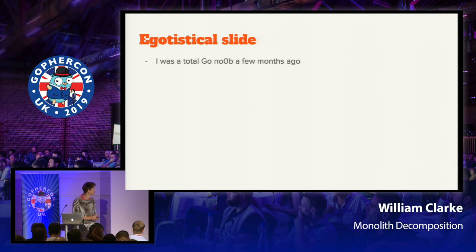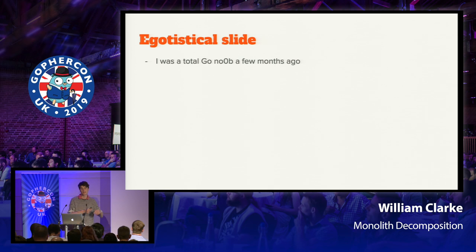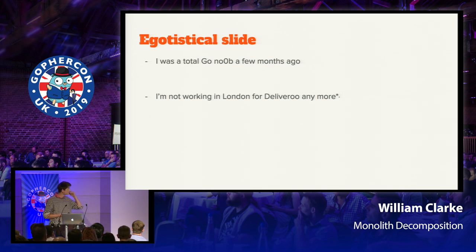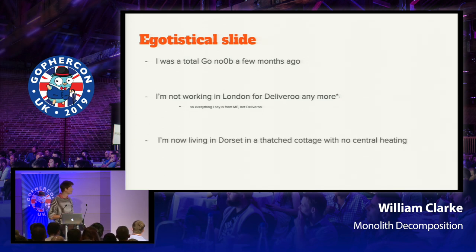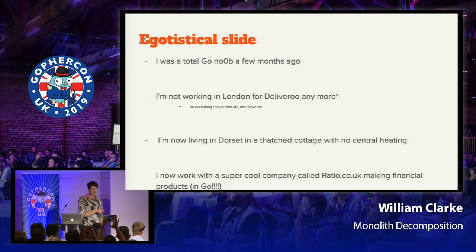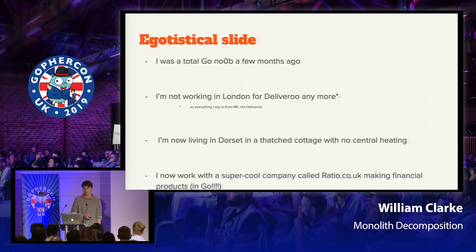Here's some stuff about me. I only picked up writing Go a few months ago, so this is from the perspective of someone who is used to doing Ruby. If anyone out there is doing another language but wants to try Go and somehow wedge that into work, maybe this might help. I'm not working for Deliveroo anymore, so stuff that I say is me and not them. I'm now living in Dorset in a thatched cottage with no central heating. I'm now working with a really cool company called Ratio doing finance stuff, financial products. Both Deliveroo and Ratio are certainly hiring for developers — Ratio wants remote people, so come see me or apply.